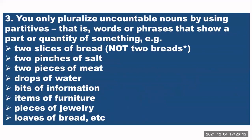Rule number three — you only pluralize uncountable nouns by using partitives. Partitives are words or phrases that show a part or quantity of something. For example: two slices of bread, a pinch of salt or pinches of salt, a piece of meat or pieces of meat, a drop of water or drops of water, a bit of information or bits of information, an item of furniture or items of furniture, a piece of jewellery, a loaf of bread or loaves of bread.